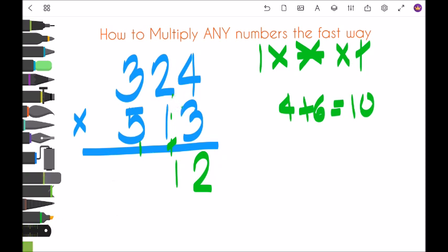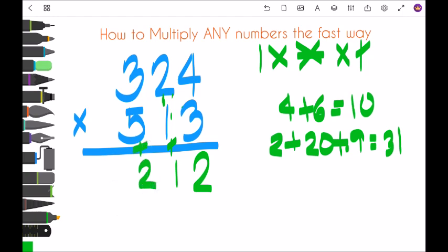Next is one, two times one is two, five times four is twenty, plus three times three is nine. So two plus twenty, twenty-two plus nine is thirty-one. Thirty-one plus one is thirty-two, so two carry three.